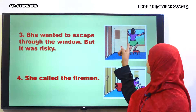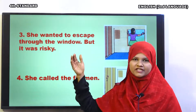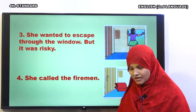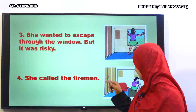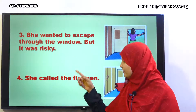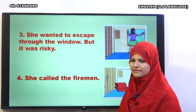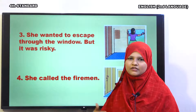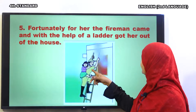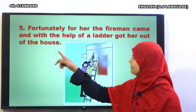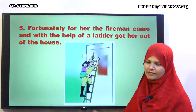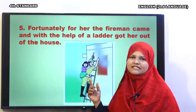She wanted to escape through the window, but it was risky. Khidki bahut unchi thi, Ashwini koshish kar rahi thi ke khidki se kud kar apni jaan bachaye, but it was really risky. So she called the fireman. Jab usko kuch nahi sujha, khidki se utarna risky laga toh fori usne fireman ko call kiya. Fortunately for her, the fireman came and with the help of a ladder, got her out of the house. You have to write these sentences as a paragraph.